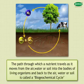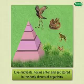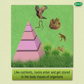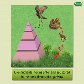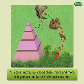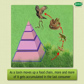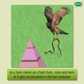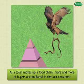Similar to nutrients, even toxins enter the bodies of organisms, get stored in their body tissues, and thus get transferred to higher trophic levels. The problem is that as a toxin moves up a food chain, more and more of it gets accumulated in the last consumer. This can be very well understood with the help of the following example.